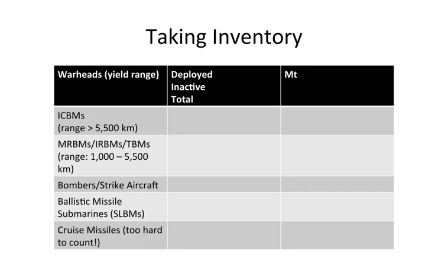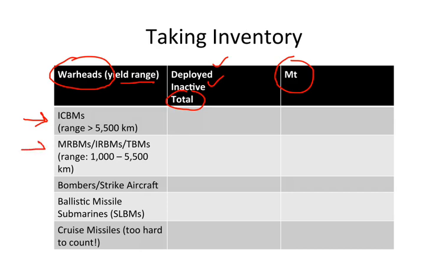We're going to simplify things by using a template. We'll look at a country's warheads divided into deployed and inactive for a total, along with the yield range and a total megatonnage estimate for that country's arsenal. Then we'll look at how many intercontinental ballistic missiles a country has — missiles with a range of over 5,500 kilometers — the number of medium-range ballistic missiles, the number of bombers and strike aircraft, and the number of ballistic missile submarines and submarine-launched ballistic missiles deployed in those submarines.